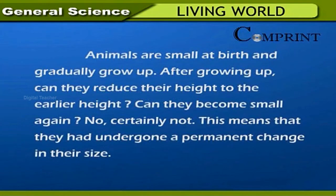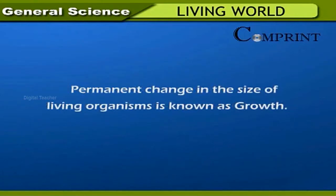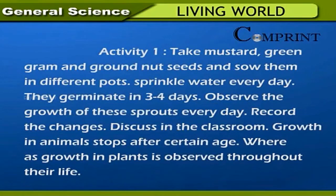Animals are small at birth and gradually grow up. After growing up, can they reduce their height or become small again? No, certainly not. This means they have undergone a permanent change in their size. Permanent change in the size of living organisms is known as growth. Activity: Take mustard, green gram, and groundnut seeds and sow them in different pots. Sprinkle water every day — they germinate in three to four days. Observe and record the growth of these sprouts daily and discuss in the classroom.